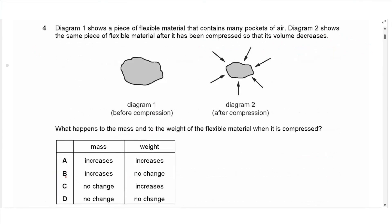Question 4: A piece of flexible material containing many air pockets is compressed so its volume decreases. What happens to the mass and weight of the flexible material itself? The material itself did not change, so mass is unchanged. Weight equals mg, and g did not change, so weight is also unchanged. Answer is D.